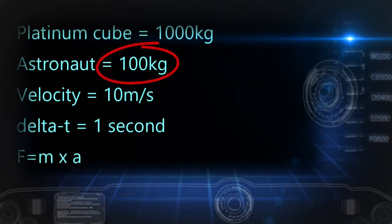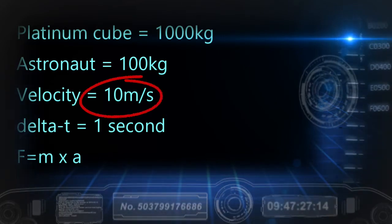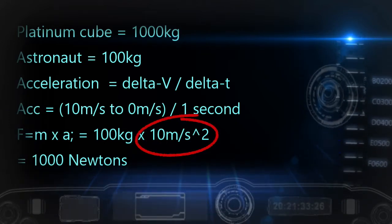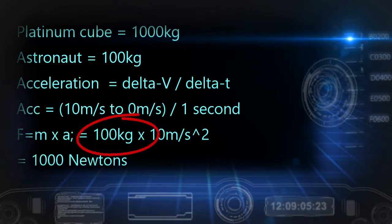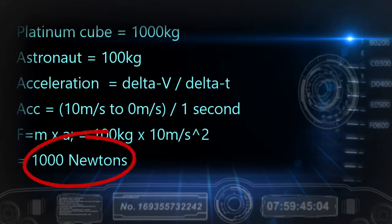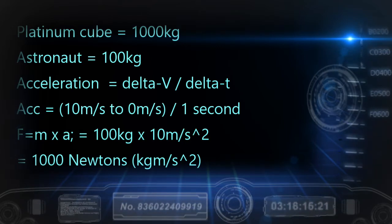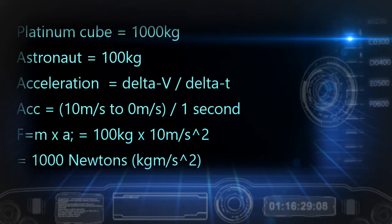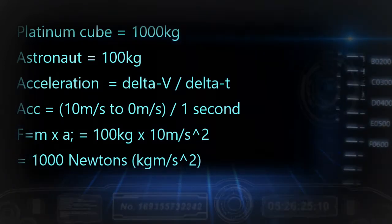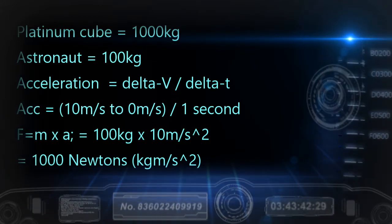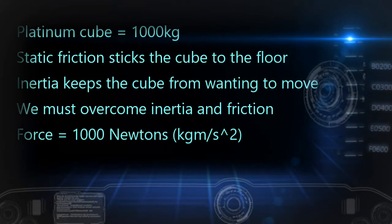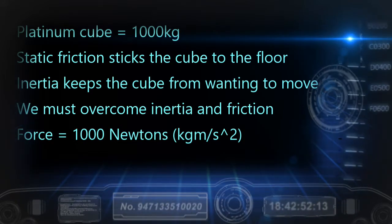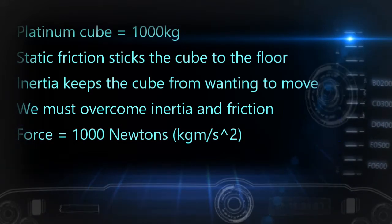100 kilograms is still my mass. I went from 10 meters per second to 0 over one second, so my deceleration was 10 meters per second squared. Multiplied by my mass of 100 kilograms, I get 1,000 kilogram meters per second squared, or 1,000 newtons. When I push on the cube, it pushes back with an equal and opposite force. The mass of the cube resists a change in velocity — we call this inertia. When a cube is sitting on a floor, we have static friction, which is greatest just before the cube starts to slide. Once sliding, we must overcome kinetic friction, which is always less than static friction.